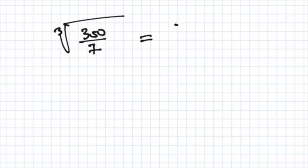This equates to cube root of 50, because 350 over 7 is just 50.